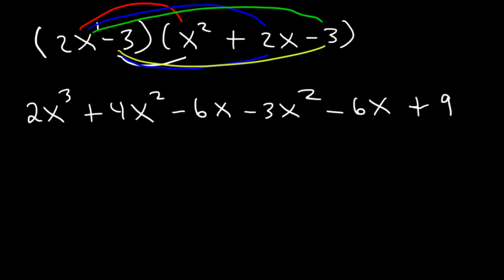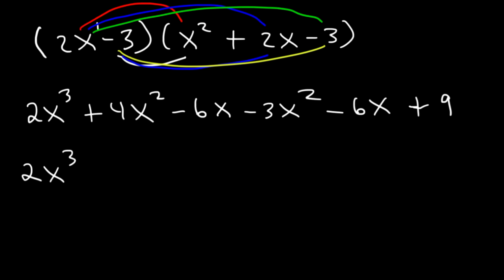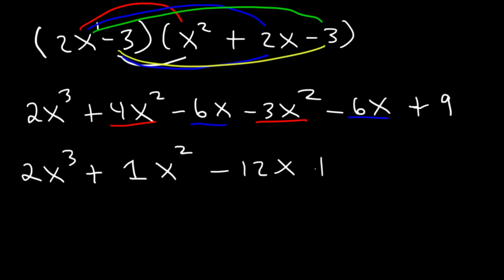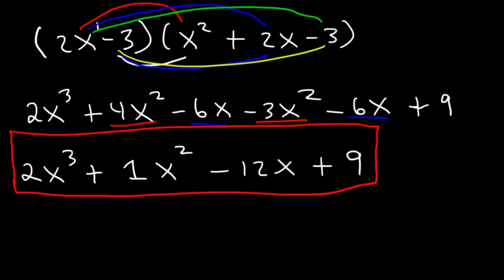Now, let's go ahead and combine like terms. There's nothing to combine the x cubed with, so we're just going to rewrite it as 2x cubed. We can combine the two x squared terms: 4 minus 3 is 1, so this is going to be positive 1x squared. We can combine negative 6x plus the other negative 6x together — that's going to be negative 12x. And then plus 9. So this is the answer: 2x cubed plus x squared minus 12x plus 9.